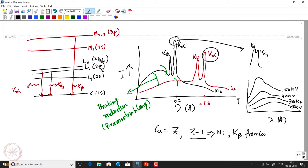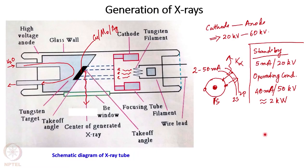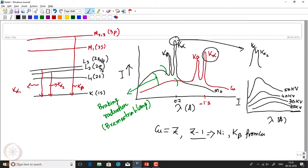If we use a nickel filter in front of the X-ray beam, what comes out will be filtered and as a result we will get only copper K-alpha radiation. Similarly, for molybdenum we can use a filter of atomic number Z minus 1, that is niobium, as a filter.